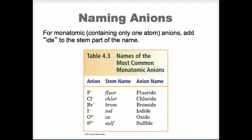Negative ions are called anions and are usually nonmetals. To name an ionic compound, we use the name of the metal plus the name of the anion. The sodium ion plus the chloride ion gives us sodium chloride.